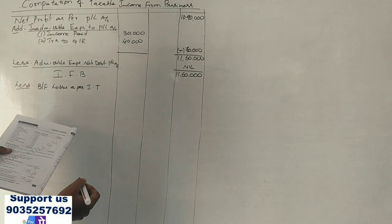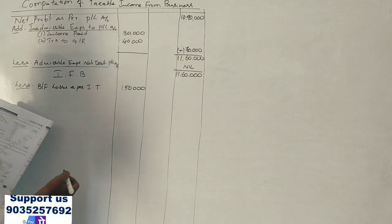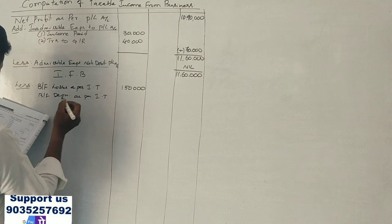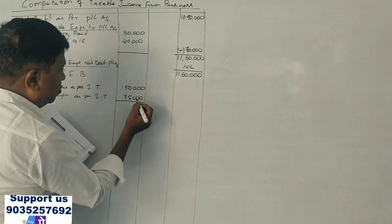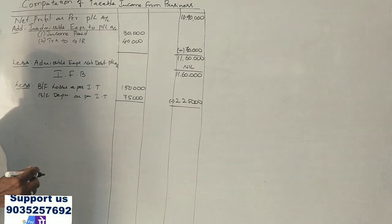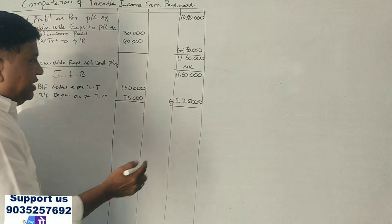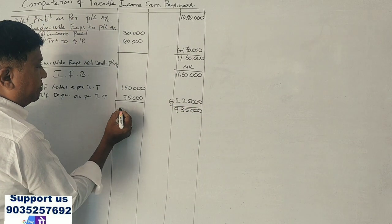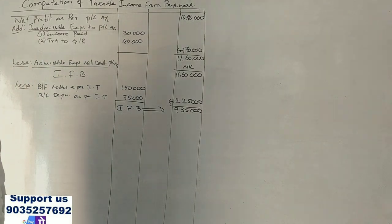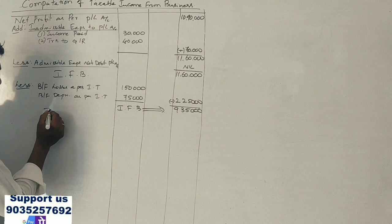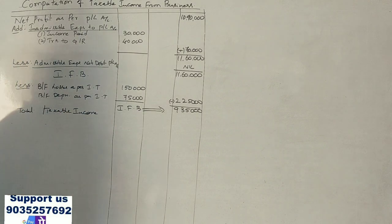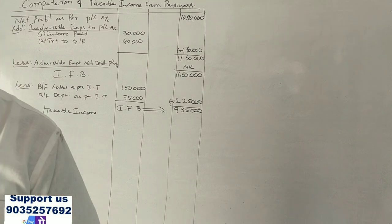The brought forward losses as per income tax is 1,50,000, and unabsorbed depreciation as per tax is 75,000. The total deduction amounts to 2,25,000. Therefore, income from business works out to 9,35,000 rupees as taxable income.